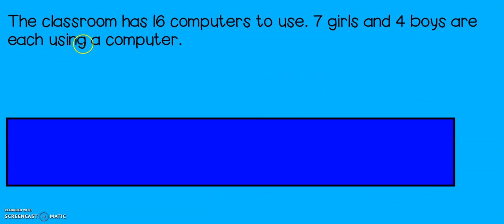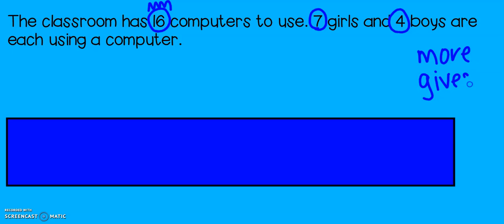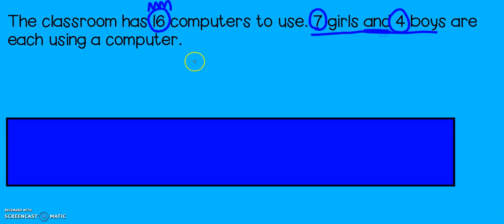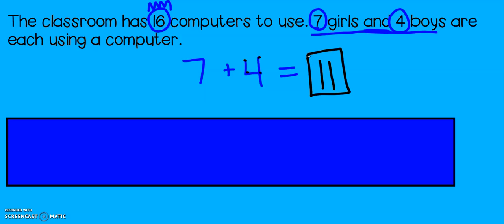Let's take a look at another problem. The classroom has sixteen computers to use — that means that's our total number of computers. Seven girls and four boys are each using a computer. Now, it doesn't clearly tell me if I should add or subtract because I don't see any words like 'more' or 'gives.' But it does say that seven girls and four boys are each using a computer. So I'm going to add those up to see how many kids are using computers already. Seven, eight, nine, ten, eleven — eleven students are using a computer right now.